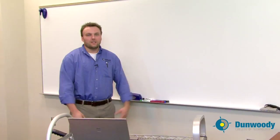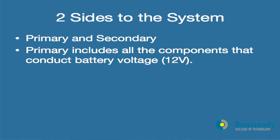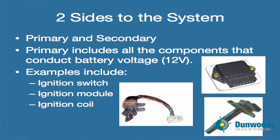There are two sides to every ignition system — both the primary and the secondary side. The primary includes all the components that conduct battery voltage, which is approximately 12 volts when idle and 14.4 volts when running. Some examples of the components include the ignition switch, which is what you're actually turning when you turn the key on your vehicle.